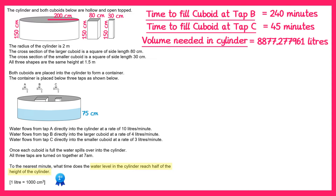We're now ready to calculate how long it takes for the cylinder to fill to this level. At seven o'clock there are zero litres inside the cylinder. The next important time is 45 minutes later at 7:45, because at this point the cuboid underneath tap C has filled up. During this 45-minute window, tap A has been inputting water directly into the cylinder at a rate of 10 litres per minute, so at this point there'll be 450 litres of water inside the cylinder.